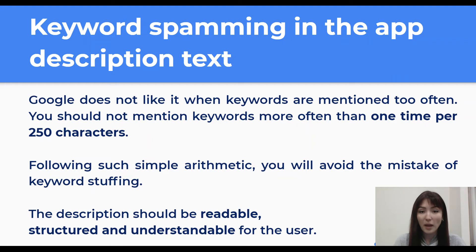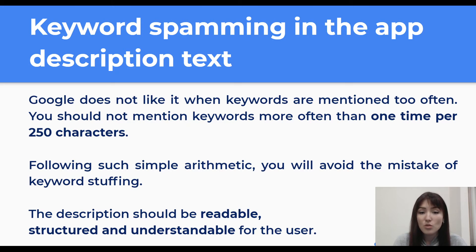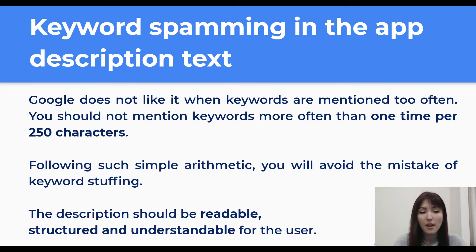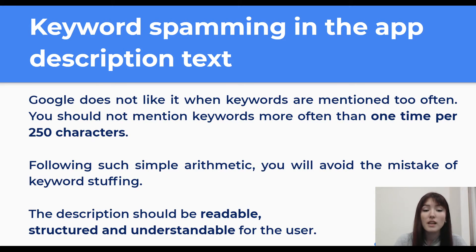Avoid keyword spamming in the app description text. Google does not like it when keywords are mentioned too often. You shouldn't mention keywords more often than once per 250 characters. Following such simple arithmetic, you will avoid the mistake of keyword stuffing. The description should be readable, structured, and understandable for the user.